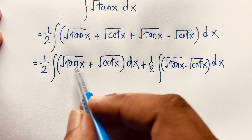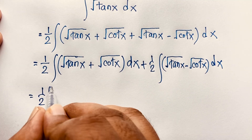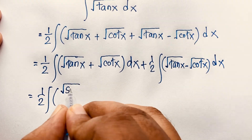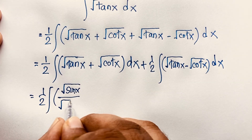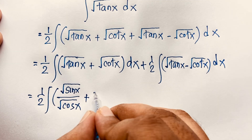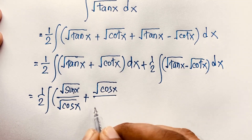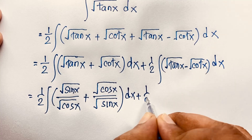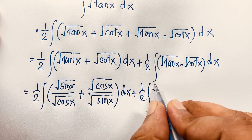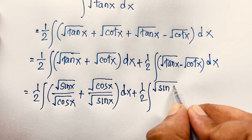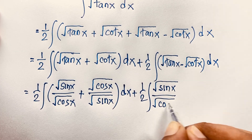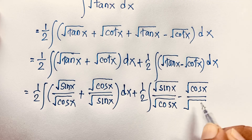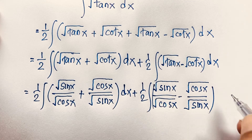Now I convert this. Square root of tan x becomes square root of (sin x / cos x), which equals square root sin x over square root cos x. And square root of cot x becomes square root cos x over square root sin x. So the first part is 1 over 2 integral of (√(sin x/cos x) + √(cos x/sin x)) dx, and the second part is 1 over 2 integral of (√(sin x/cos x) − √(cos x/sin x)) dx.